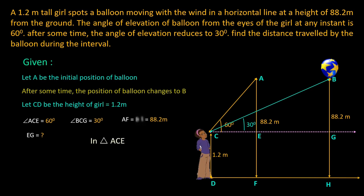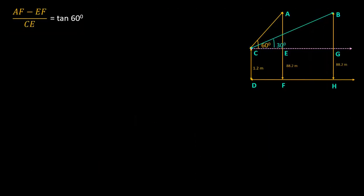For that, I am considering triangle ACE first to find CE. The trigonometric ratio that relates the side CE and AE and angle 60 degree is tan 60 degree. Tan 60 degree is opposite by adjacent. And we know that AE can be written as AF minus EF. We know that AF is 88.2 meter and EF is height of the girl that is 1.2. The value of tan 60 is root 3. When we substitute all these in the ratio, we have 88.2 minus 1.2 divided by CE equals root 3.